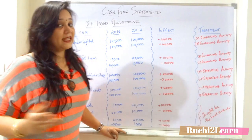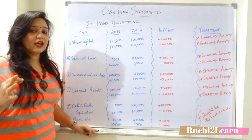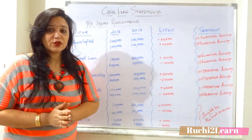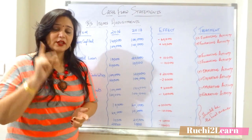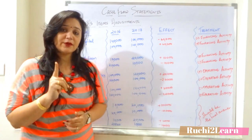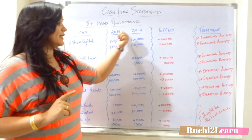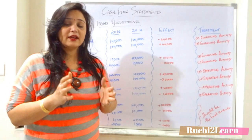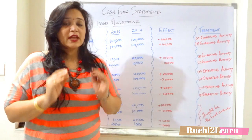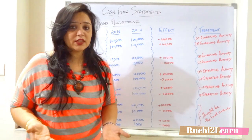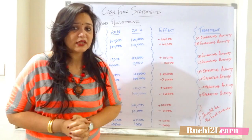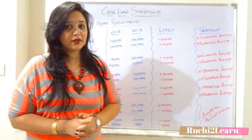Let's start. First, we'll understand how to approach the question. You will be asked to prepare a cash flow statement. You will be given a balance sheet plus a profit and loss account plus some adjustments. The balance sheet will be given for two years, for example 2016 and 2017. The profit and loss account will be for the current year. Sometimes the question is without adjustments, so you have to make assumptions and solve the problem.